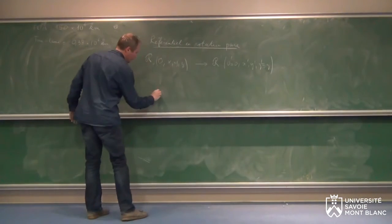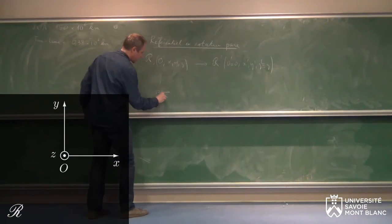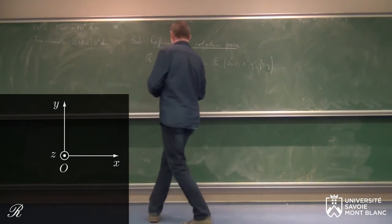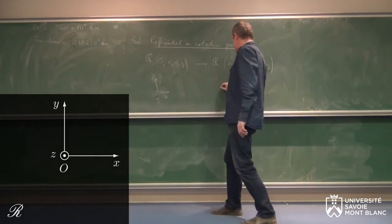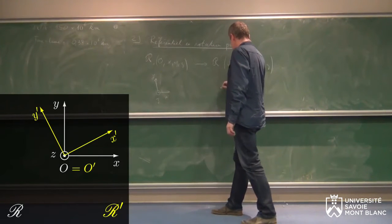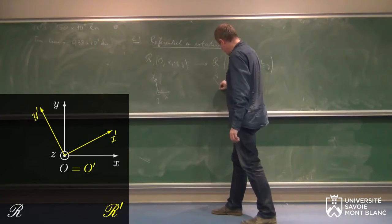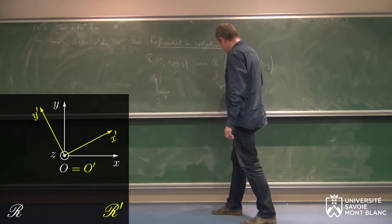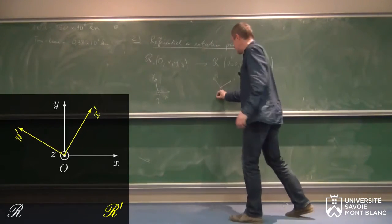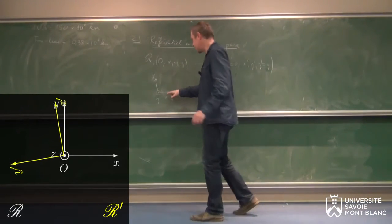Si je représente ça du dessus, j'ai X comme ça, Y comme ça, et Z vers moi. L'autre référentiel a des axes qui peuvent être tournés, X', Y', et ça tourne autour de l'axe Z. Le centre ici étant en O', c'est-à-dire le même qu'en O.